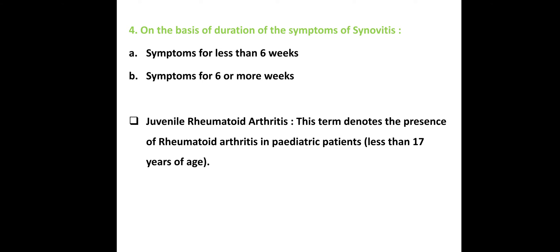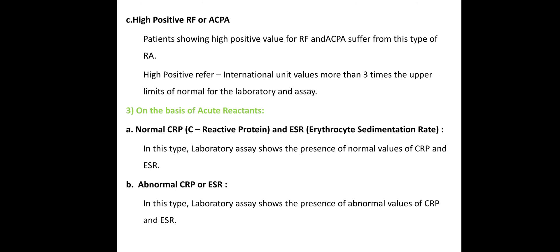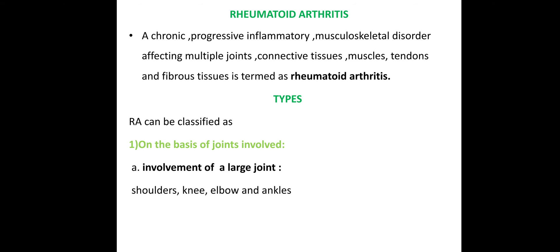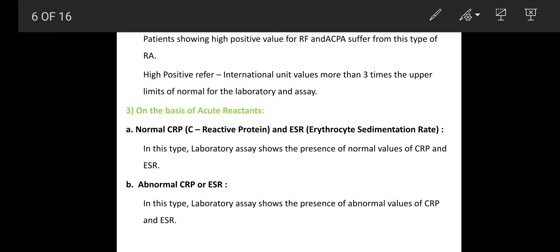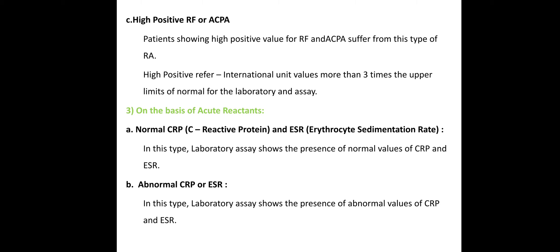A distinct type is the presence of rheumatoid arthritis in children — pediatric patients less than 17 years of age. So in total there are 4 classifications: by number of joints involved, by serological test (RF and ACPA), by acute reactants (CRP and ESR), and by duration of synovitis.